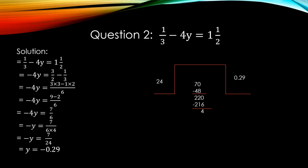Now consider question number 2. It is a linear equation in one variable with fractions. 1 upon 3 minus 4y equals 1 whole number 1 upon 2. We have to find out the value of y. Now, let's start the solution. In the solution, you first write the question again. 1 upon 3 minus 4y equals 1 whole number 1 upon 2.